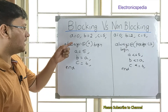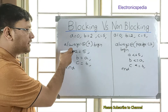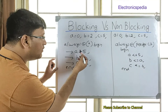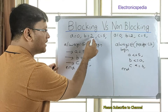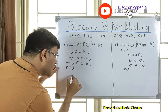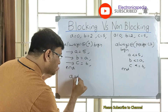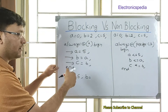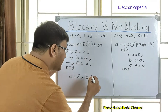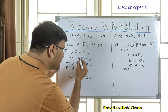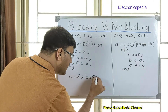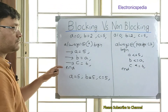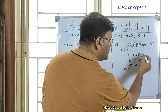In the blocking statement, each statement executes one after the other. First, A is assigned 5 — it gets updated immediately. Then B is assigned A: since A has already updated to 5, B also becomes 5. Then C is assigned B: since B is now 5, C also becomes 5. So all three signals — A, B, and C — become 5 in the same clock cycle with blocking assignments.